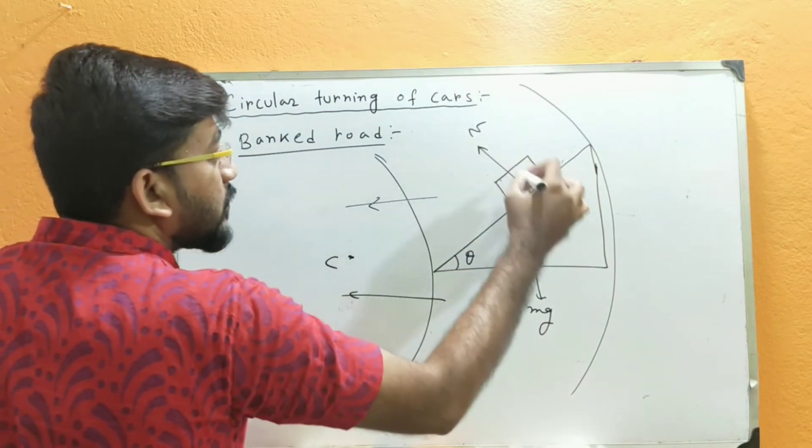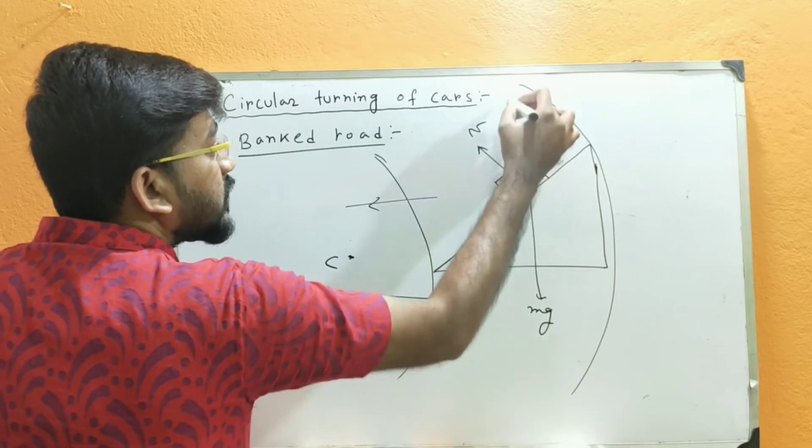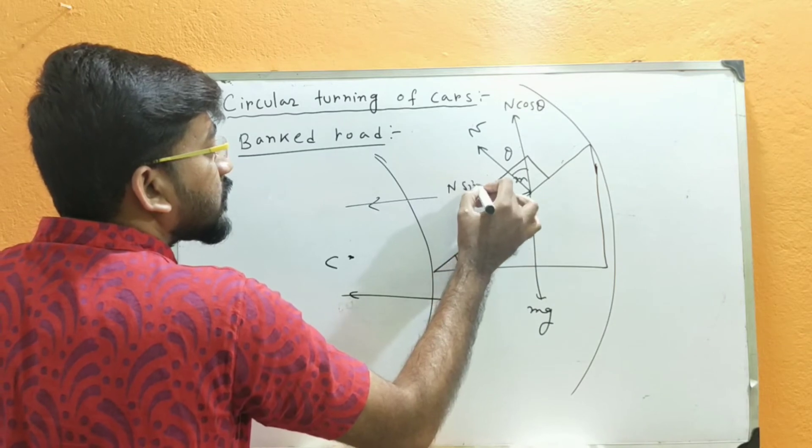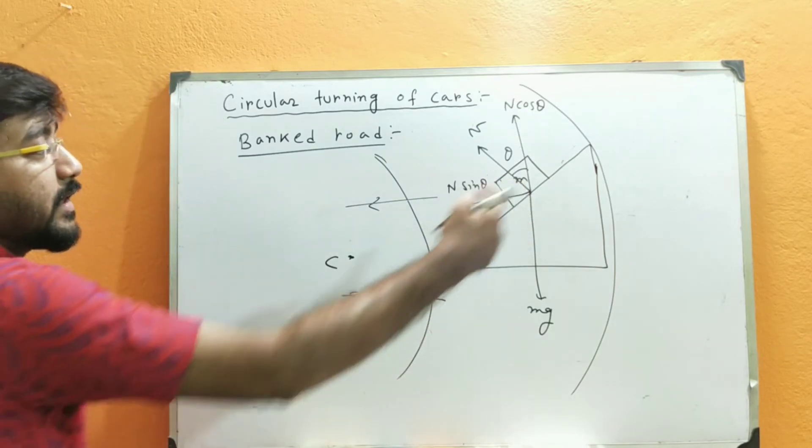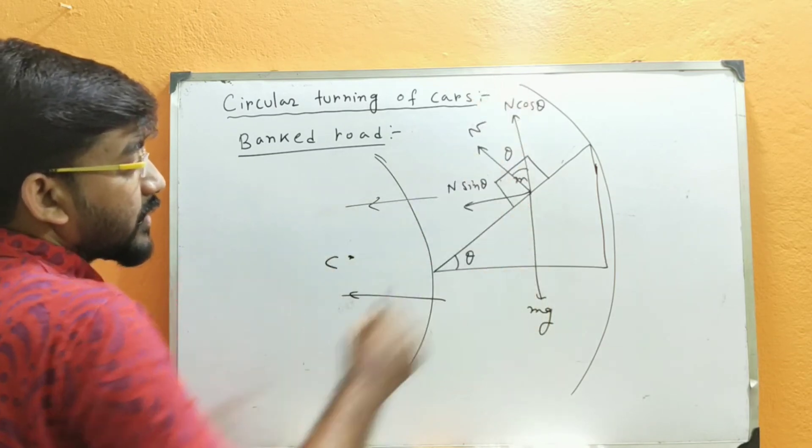Now if we resolve this N into two components, since this angle is theta, this angle will also be theta. So it will be N cos theta and this will be N sin theta. From the figure, N sin theta will provide the centripetal force, and N cos theta will balance mg.